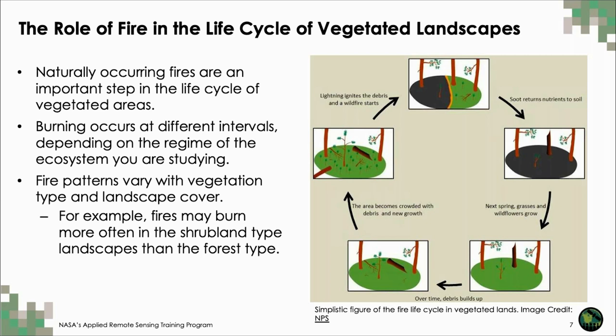In this example, the ignition source is lightning. Burning takes place over the vegetated area, returning nutrients to soil, allowing for new growth of grasses and other plants. Over time, this growth continues, regenerating vegetation within the area and dead biomass debris accumulates, and the area once again becomes crowded with vegetation.